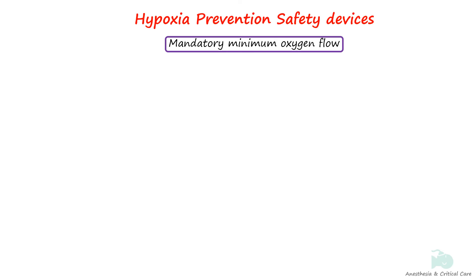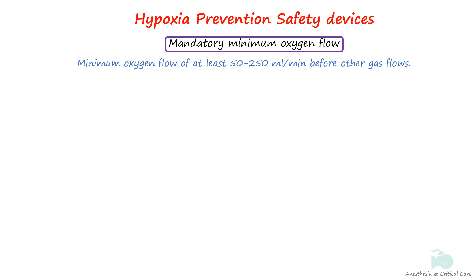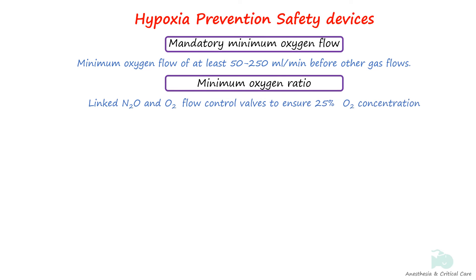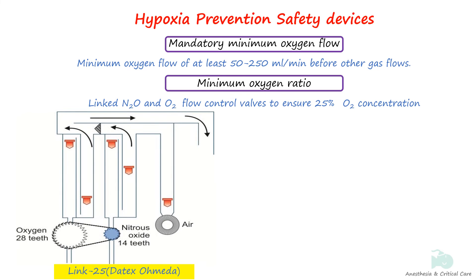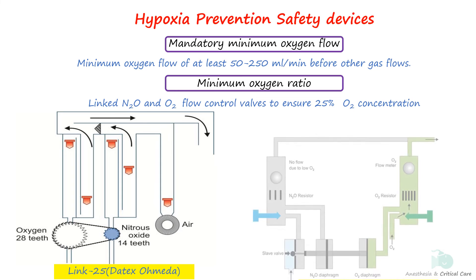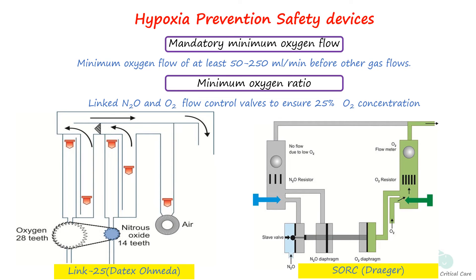There are systems designed to protect against delivery of a hypoxic mixture at the flow meter level. Machine safety standards require a mandatory minimum oxygen flow of 50 to 250 milliliters per minute before other gases will flow. Some machines activate an alarm if oxygen flow falls below a certain limit. In modern anesthesia machines, nitrous oxide and oxygen flow controls are physically interlinked so that a fresh gas mixture containing at least 25% oxygen is delivered at the flow meters when only nitrous oxide and oxygen are used. Datex-Ohmeda uses a mechanical linkage called Link 25; North American Draeger uses a pneumatic interlink called the Sensitive Oxygen Ratio Controller.